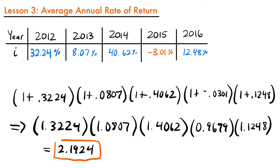This number, 2.1924, represents the value of an investment in 2016 that started in 2012. For example, if we had $100 invested in this stock in 2012, multiplying that by this rate would show how much our investment is worth at the end of 2016. However, we are not interested in knowing that per se — we want to know what the average rate is over this period. This is not the average annual rate of return itself; we're going to use it to help find it.